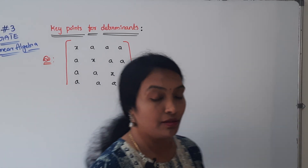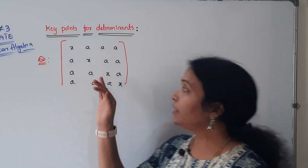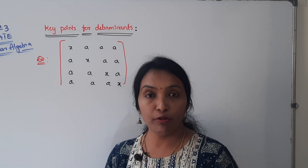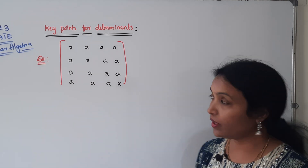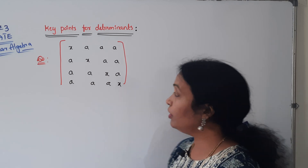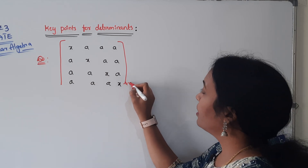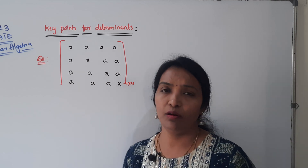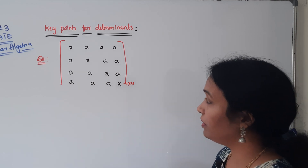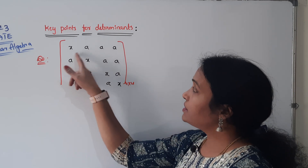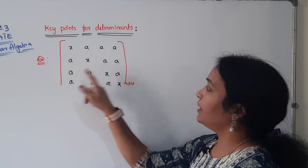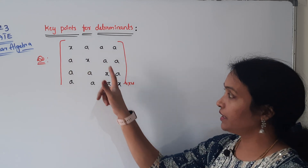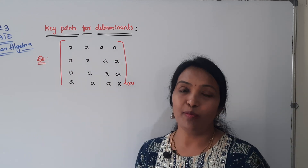Now for the 4x4 problem: if you have 3 or 4 types of problems, you apply the same approach. The matrix has x on the main diagonal and a everywhere else — so the pattern is: x, a, a, a / a, x, a, a / a, a, x, a / a, a, a, x. First check: are all rows equal? No.